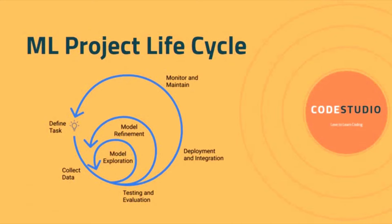This is the lifecycle of machine learning project development. It starts with defining a task — what is the requirement or problem statement — and checking its feasibility. In this stage, the client will share the problem statement or their requirement, and based on that, the analyst will try to build possible solutions and check the feasibility of those solutions.